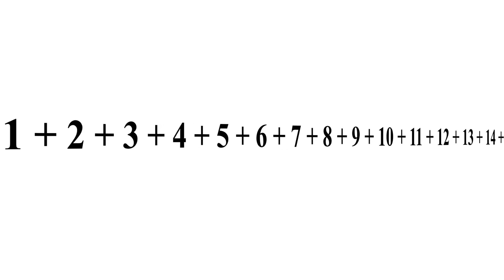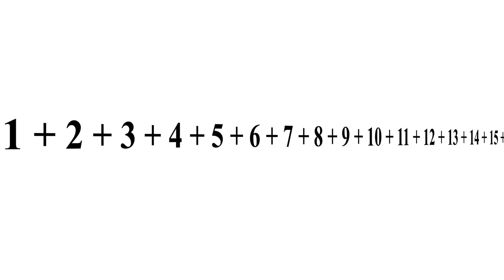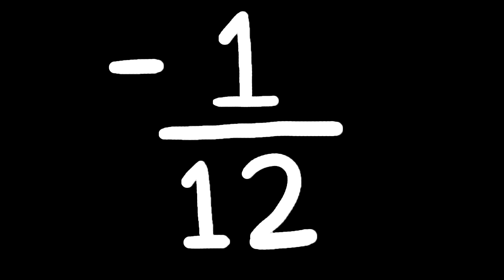This infinite series of numbers is formed by adding one, then two, then each sequential integer that follows. The sum of this fairly simple series is equal to negative 1/12, and I can prove it if we break a few math rules.